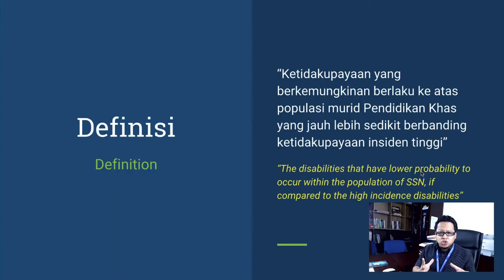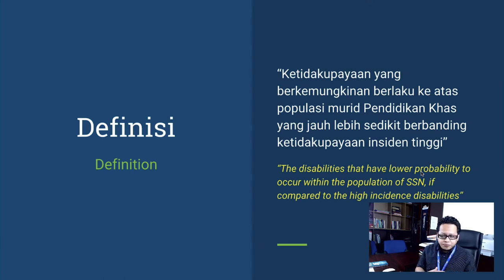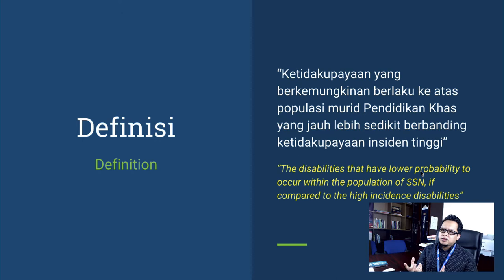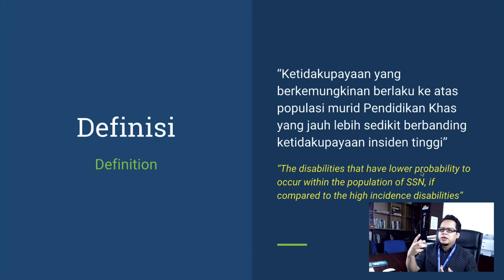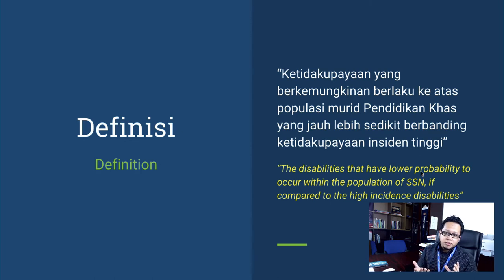Let's first go into the definition of this topic — the low incidence disability. What it is actually talking about is the probability of occurrence of this disability within the population of students with special needs. We are talking about the probability, not about the numbers of students.